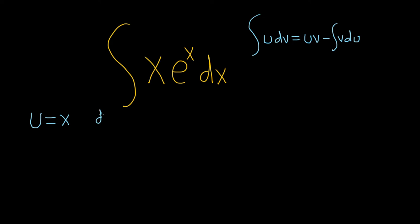And then dv is the other part. So it's e to the x. And it's really important to write down the dx as well. So the dx always goes with the dv part. So it's the rest of it. So this is your dv, this whole thing here. And this whole thing here is your u.